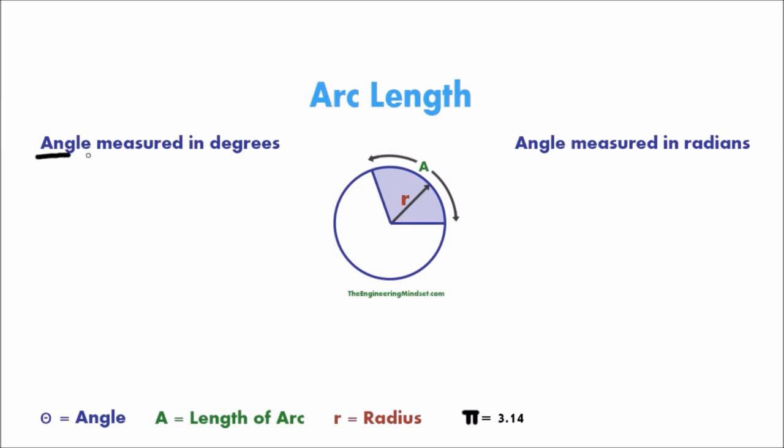So let's have a look and assume that you've measured the angle of your arc and it is measured in degrees. So for that, we're going to have A, which is the length of the arc, is equal to bracket, theta, the angle, divided by 360 degrees.